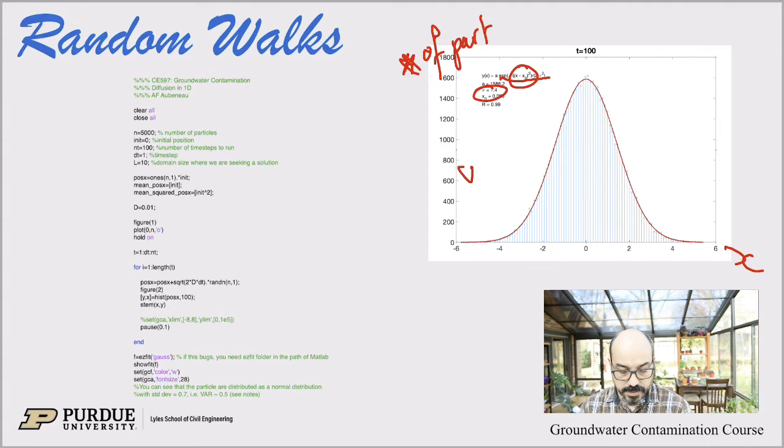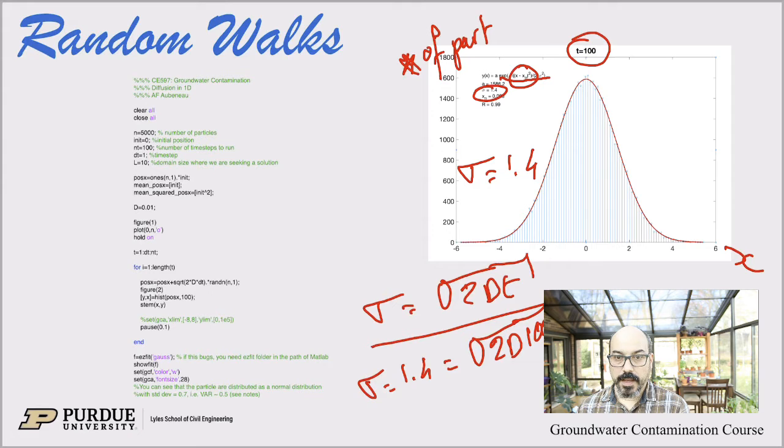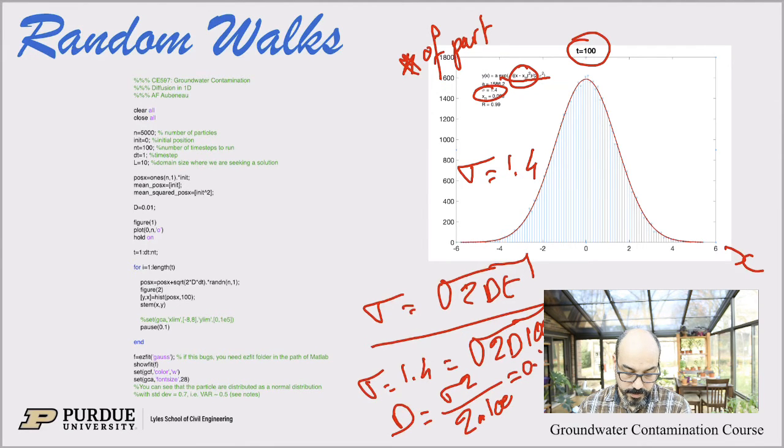If we look at sigma here is 1.4. Sigma is 1.4. Now we know that sigma is square root of 2Dt. Here this is a snapshot taken at t equals 100. So we know sigma equals 1.4 equals square root of 2D times 100, which means we can calculate D equals sigma squared over 2 times 100 which equals 0.01.